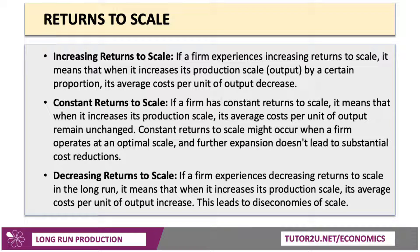There are three main types of returns to scale. Increasing returns to scale is where output rises more than proportionate to input — if that happens, average costs will fall. Constant returns is when output rises in proportion to input, meaning the firm has perhaps reached its optimal scale and unit cost stays the same. And we also have decreasing returns, where output rises less than proportionate to input, leading to diseconomies of scale and an increase in the average cost per unit of output.